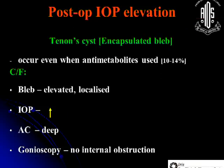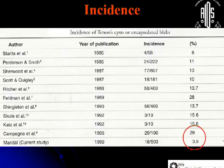Coming to my topic on Tenon's cyst or encapsulated bleb, it can occur even when you use antimetabolites. The clinical features: usually the bleb is elevated and very localized. The pressures are high and the anterior chamber is deep. You have to do gonioscopy to rule out any internal obstruction. The incidence varies from 3.5 to about 30% across studies.